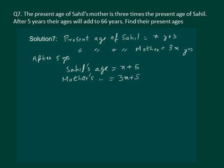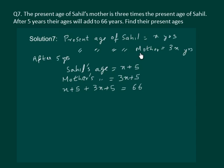It says that after 5 years their ages will add to 66 years. That means x plus 5 plus 3x plus 5 will be equal to 66. If we solve this equation and find the value of x, we will find the present age of Sahil, and then multiply it by 3 to get the present age of his mother.